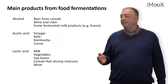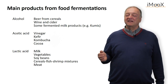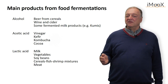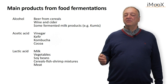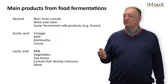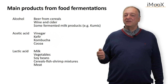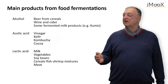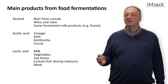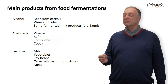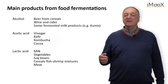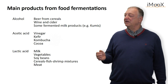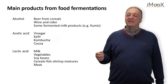The third big fermentation is the lactic acid fermentation, which is mainly carried out in milk or in vegetables — producing yogurt, sour milk, or other products like cheese. Lactic acid fermentation is also very important in vegetables, and soybeans can be fermented with lactic acid bacteria. Protein-rich foods from animals, like shrimps, fish, or meat, can also be fermented with lactic acid bacteria.